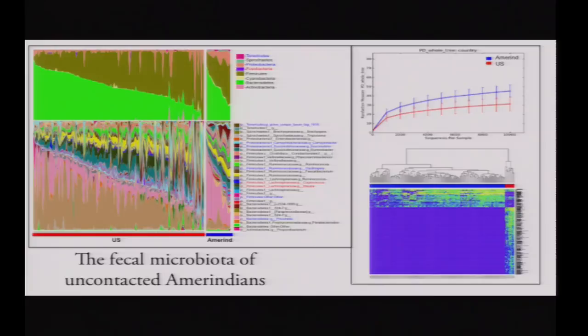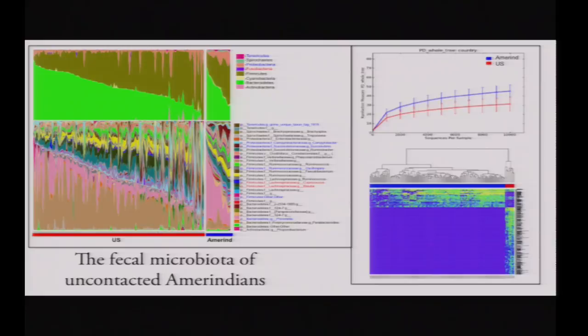We identified the 100 most important bacteria explaining the differences in a heat map. Clustering 157 U.S. people versus our 12 Amerindian fecal donors, Americans share only about a third of those 100 OTUs, while Amerindians have a large proportion of OTUs completely absent in the U.S.